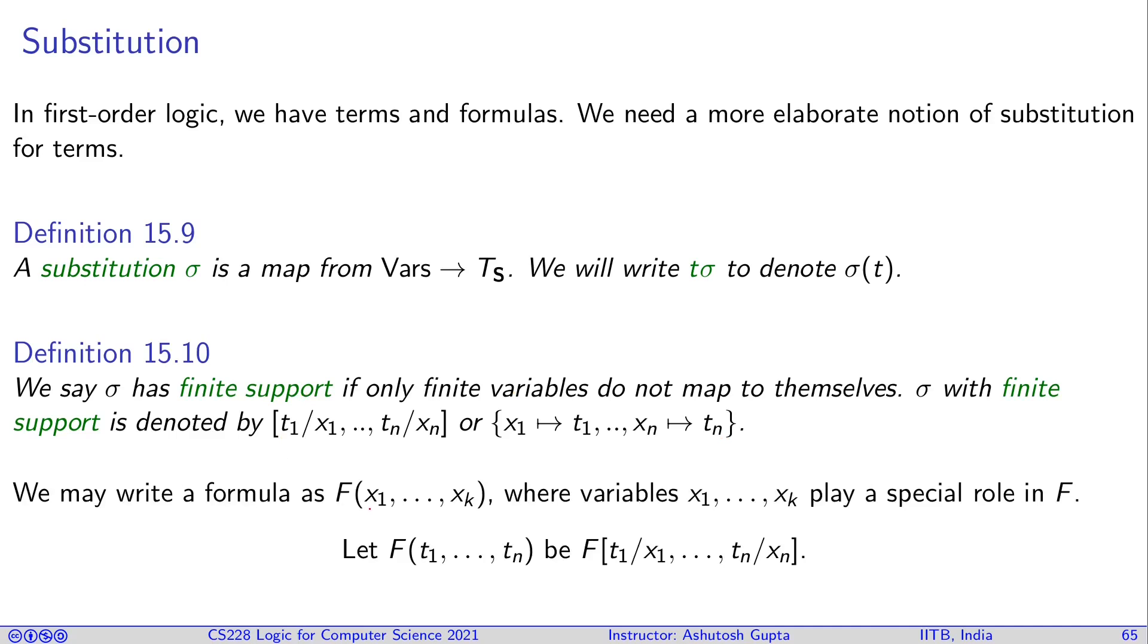We may write a formula as f(x1 to xk), where variables x1 to xk play a special role in f. If we replace all x1 and xk's from the formula and put in t1 and tn, then we write this formula f(t1 to tn).